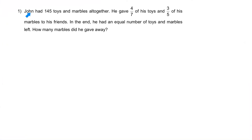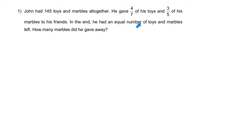Question one: John had 145 toys and marbles altogether. He gave away 4/7 of his toys and 3/5 of his marbles to his friends. In the end, he had an equal number of toys and marbles left.